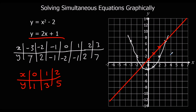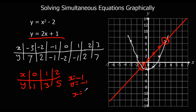We've got a solution here and a solution here. The solutions are: x is minus 1 and y is minus 1, and x is 3 and y is 7.